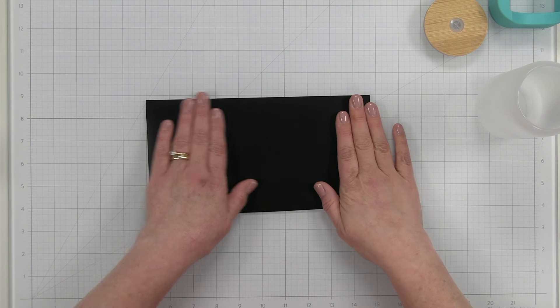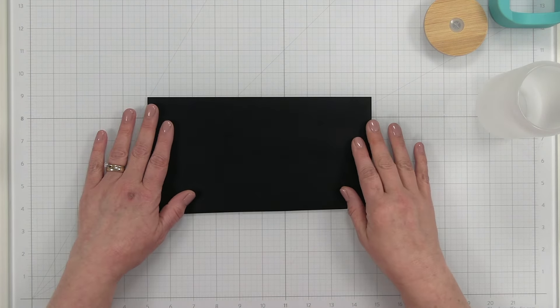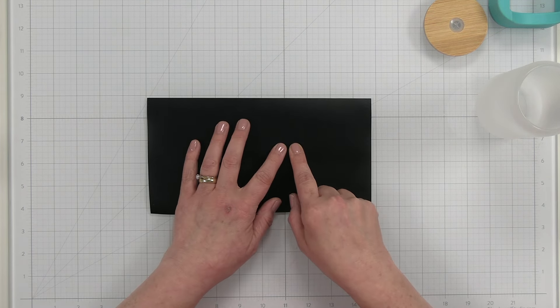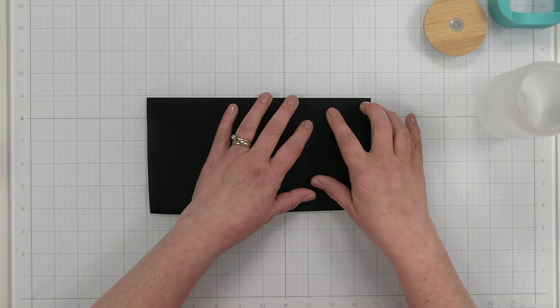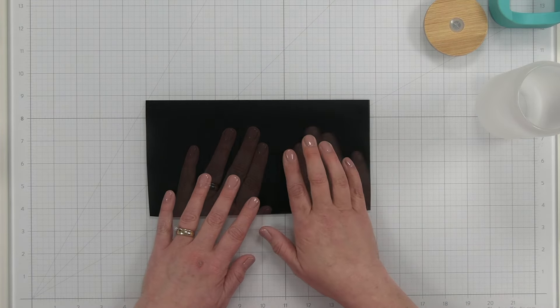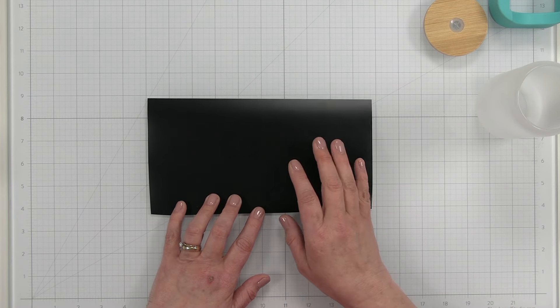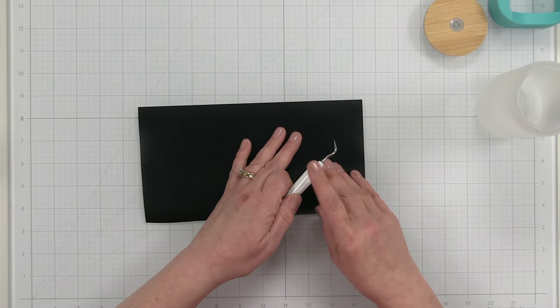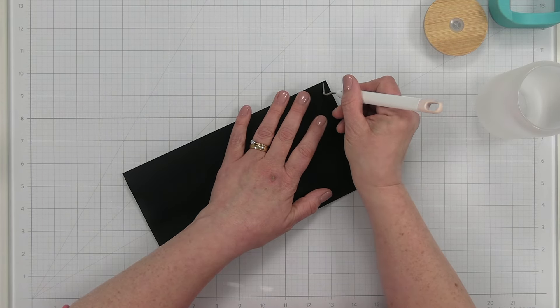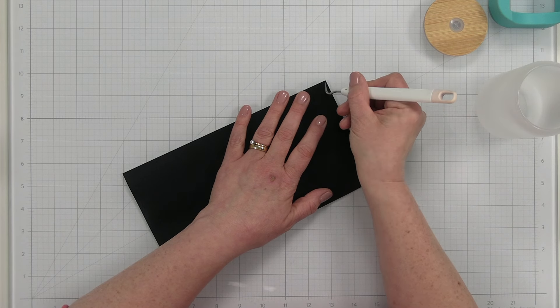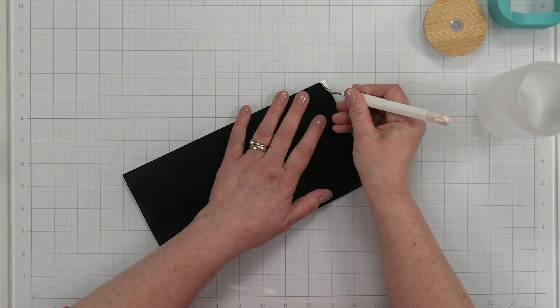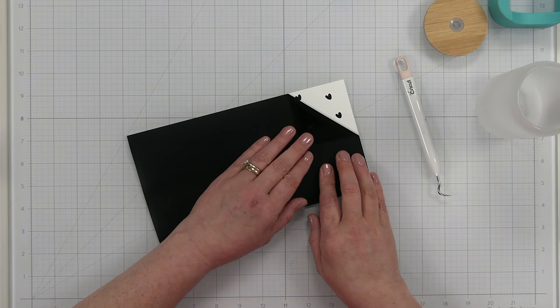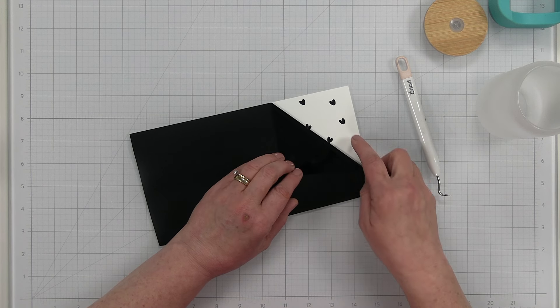Now, if you've never worked with vinyl before, what we're going to do is weed our project. Weeding the project is simply removing either the letters and leaving the outside piece, or removing the outside piece and leaving your letters. The only time you ever want to remove the actual design is if you're going to use this as a stencil, but I'm not using it as a stencil. So we're just going to go ahead and pull out the background of our design. So I'm just taking my picky tool and just going to grab it in the corner here and start peeling back. I like to peel at an angle. That's the best way that you can leave your design onto your backer piece.